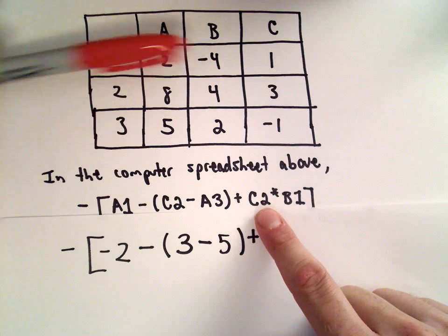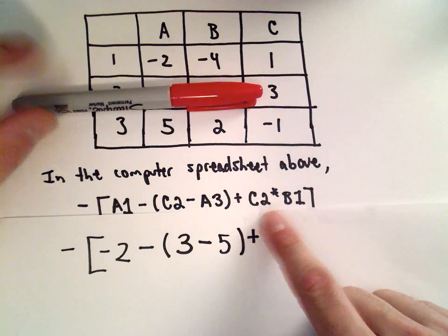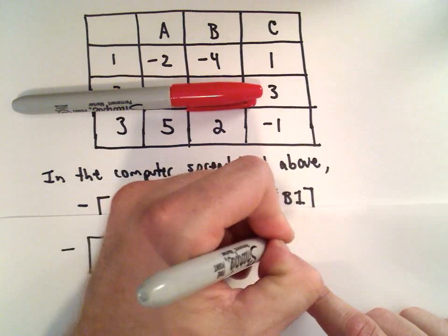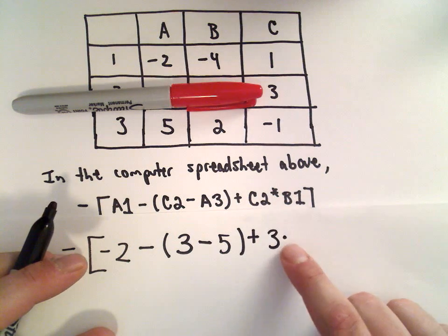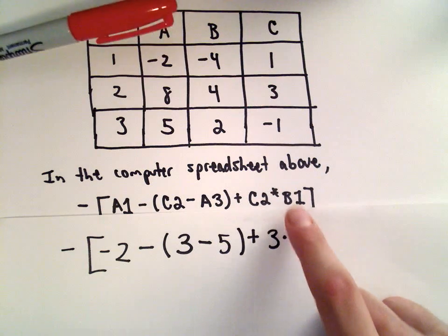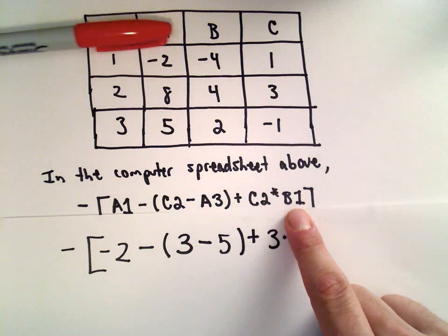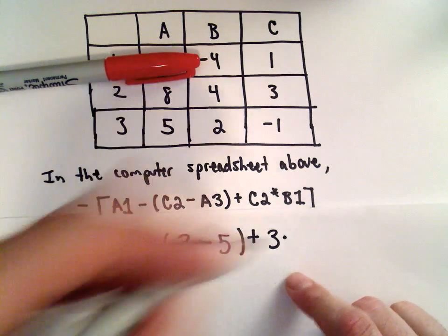Plus C2. So again, I'm going to go to the C column down to row 2. That's going to give me the value 3. Multiplied—I'm going to write, instead of using the little star notation, I'm going to use the little dot notation for multiplication. So it says then we multiply by B1. There's the B column and I just go down to the first row. That's going to be negative 4.